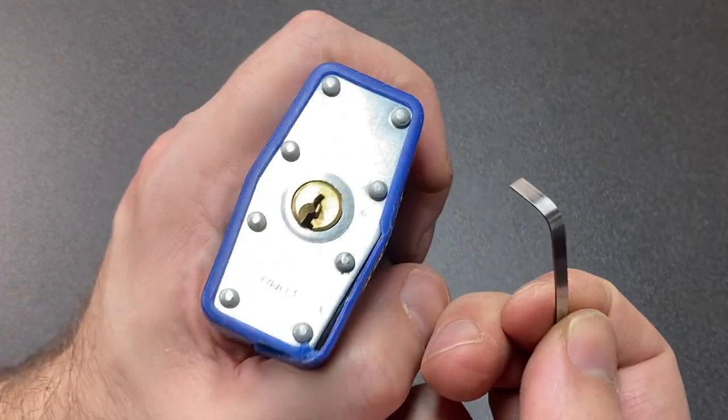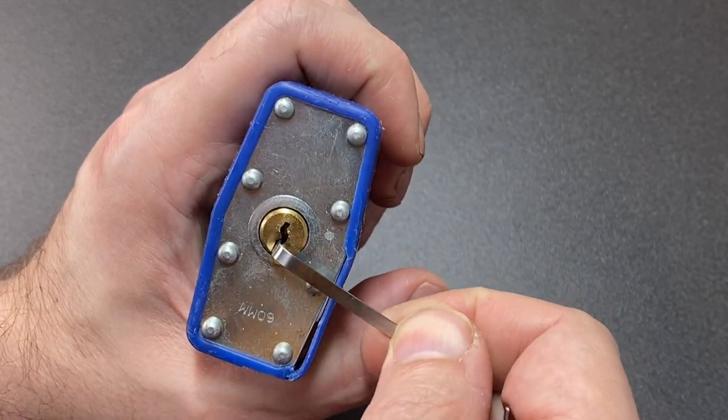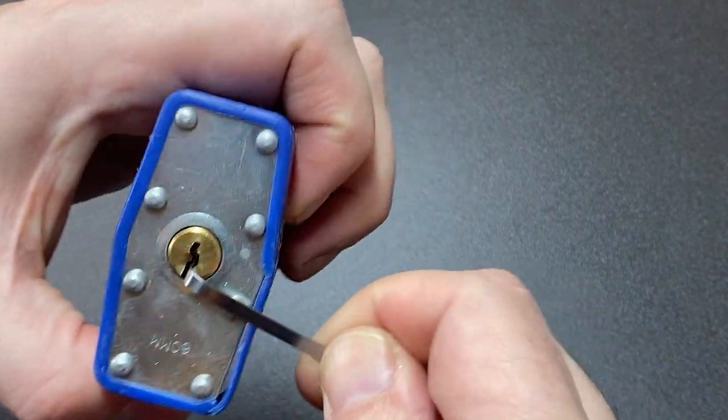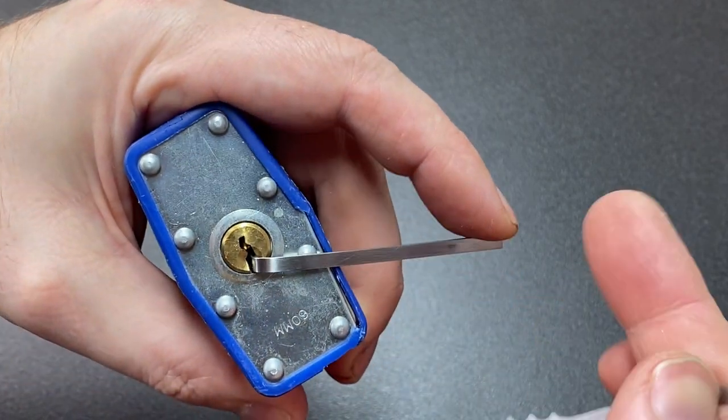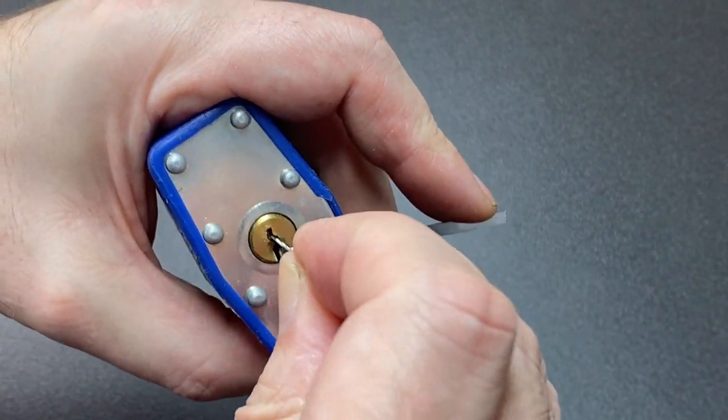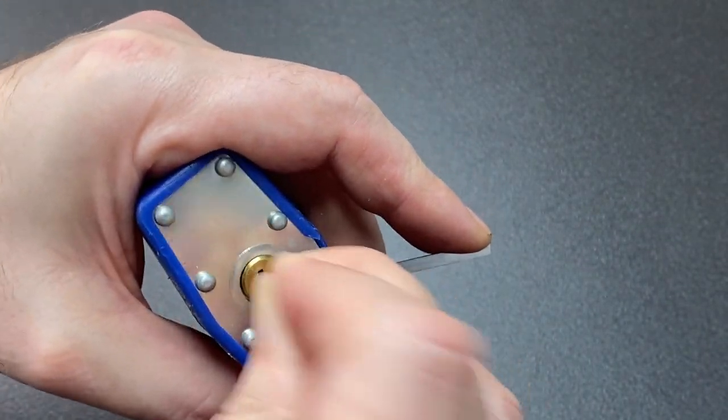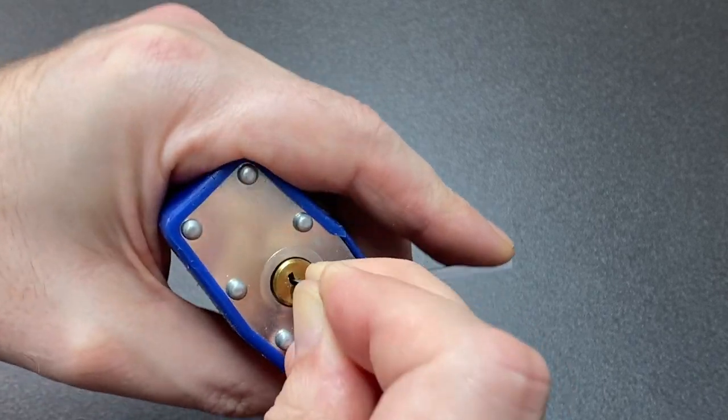The turning tool's a little large, but I can still get into one of these yellow-style keyways. Let's try using this triple peak to rake this lock. Got some good turning force, pop this in with light tension, and there we go, got an open.